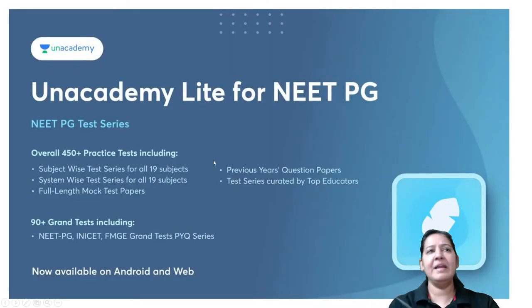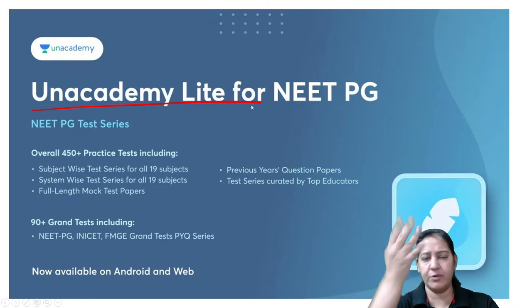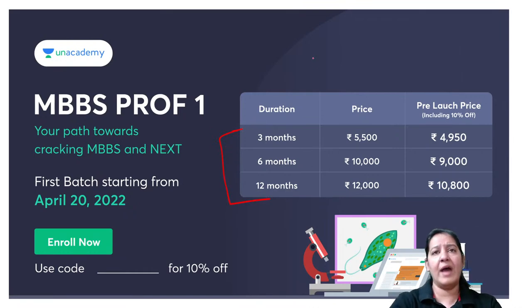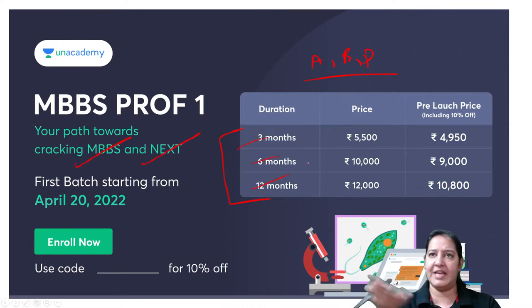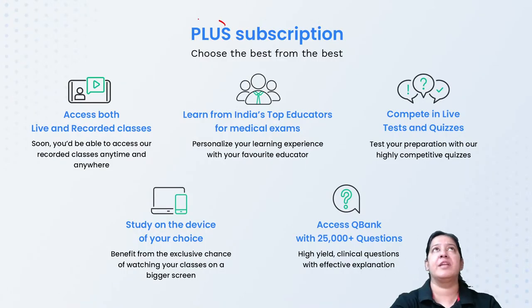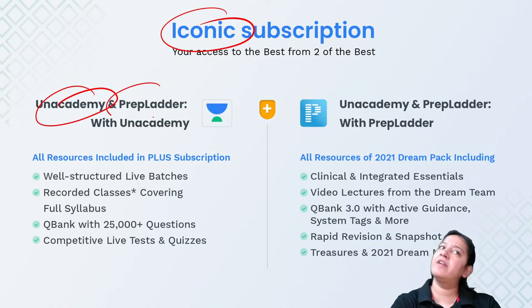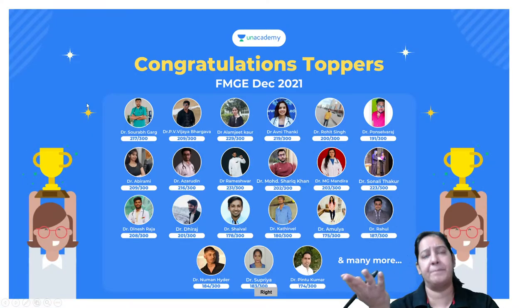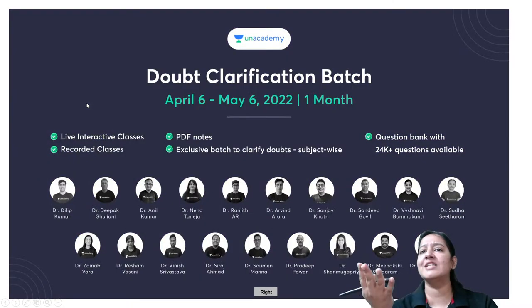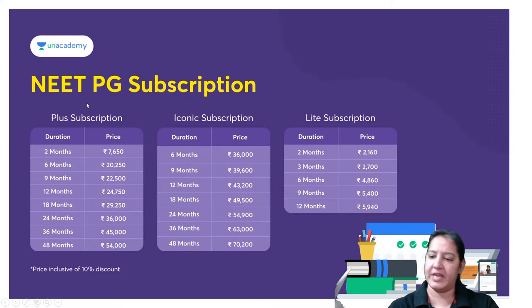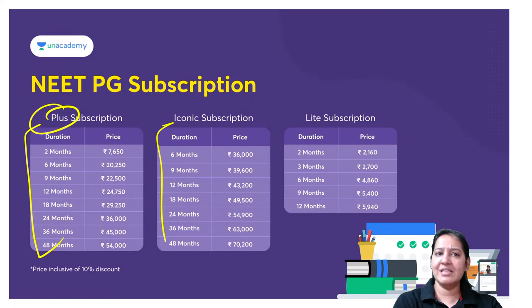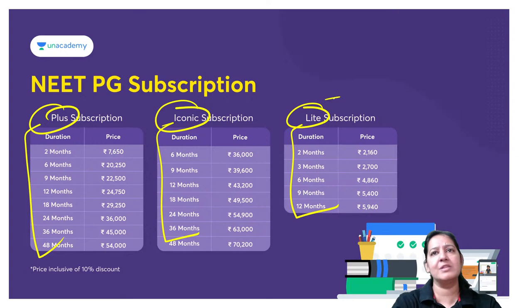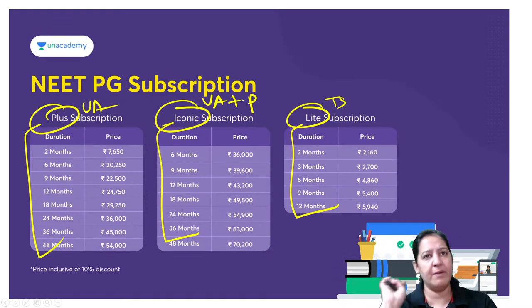Unacademy Light (test series only) is already out. Unacademy Prop 1 is already out covering anatomy, biochemistry, and physiology for university exam preparation. There are two subscription types on Unacademy: Plus gives Unacademy only; Iconic gives Unacademy plus PrepLadder access - better to go with Iconic as the price difference is very less. Longer the plan, cheaper it is, so if you are a first or second year student, go with a longer plan.